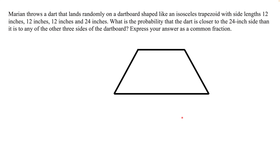Marion throws a dart that lands randomly on a dartboard shaped like an isosceles trapezoid with side lengths 12 inches, 12 inches, 12 inches, and 24 inches. What is the probability that the dart is closer to the 24-inch side than it is to any of the other three sides of the dartboard? Express your answer as a common fraction.